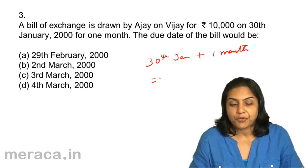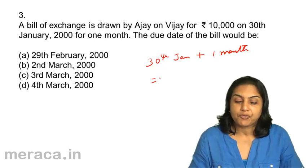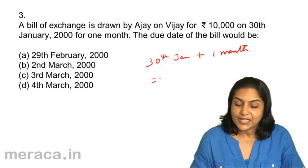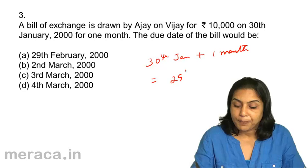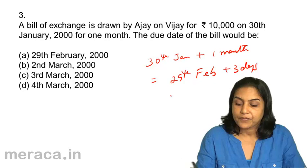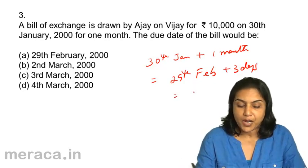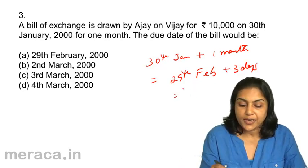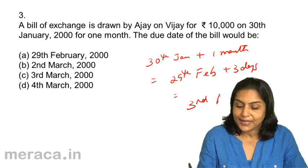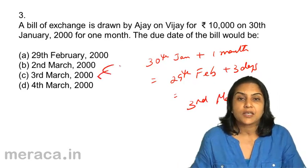30th January plus 1 month gives 28th/29th February 2000. Since 2000 is a leap year, we have 29th February, plus 3 days of grace: 1st, 2nd, and 3rd of March. The correct date would be 3rd March, answer 3c.